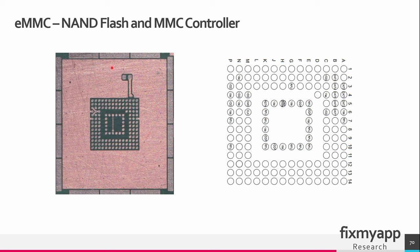The Switch can store different types of data on the eMMC, including game files, system updates, user profiles and downloaded content. The APU interacts with the eMMC controller to perform read and write operations. When a game is launched or an application is accessed, the relevant data is read from the eMMC into the RAM for execution.